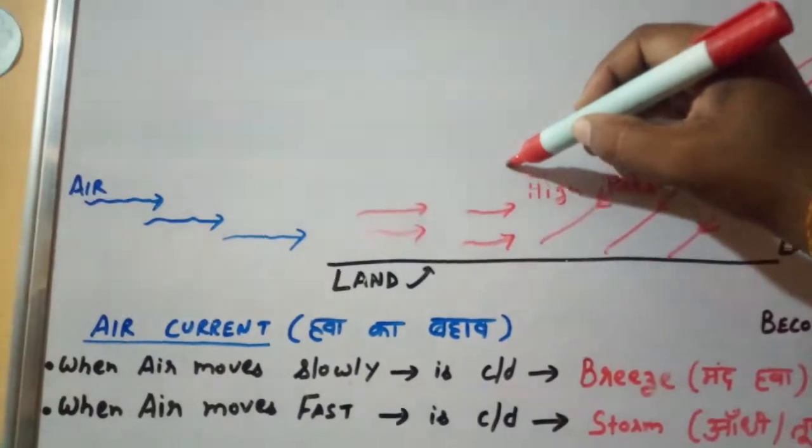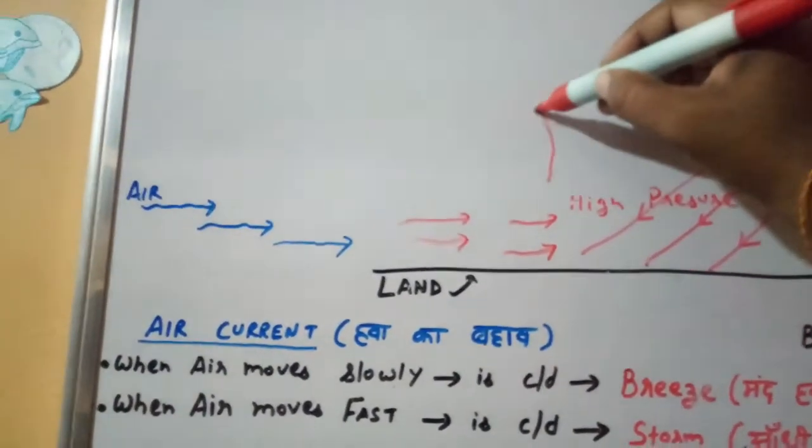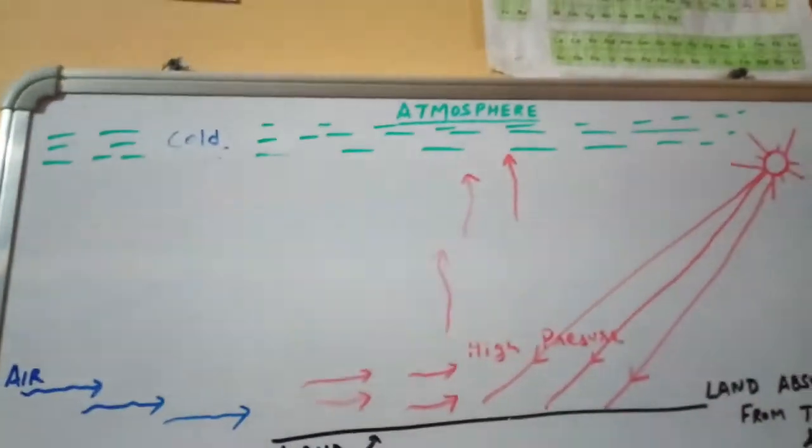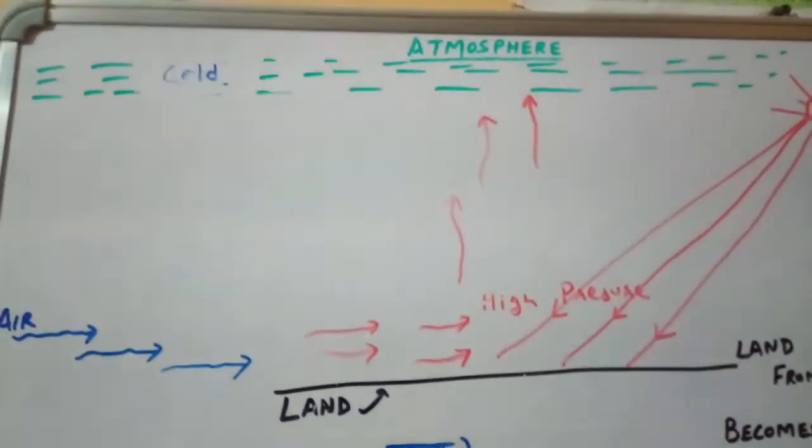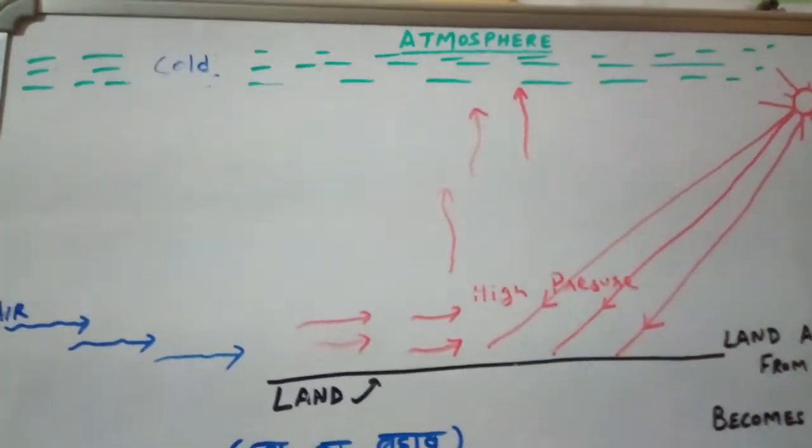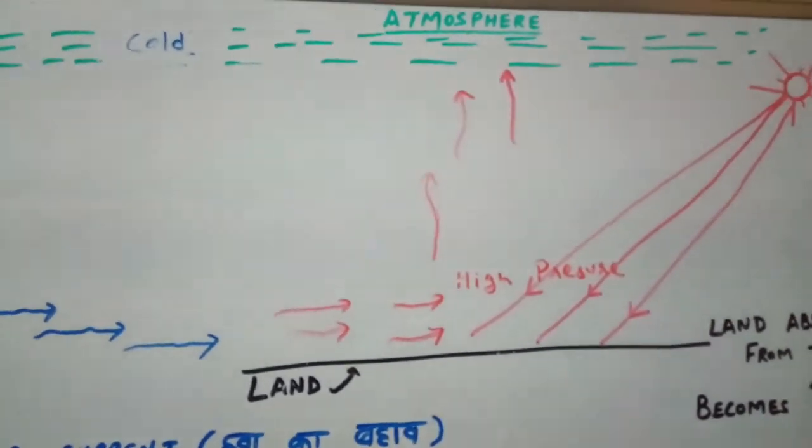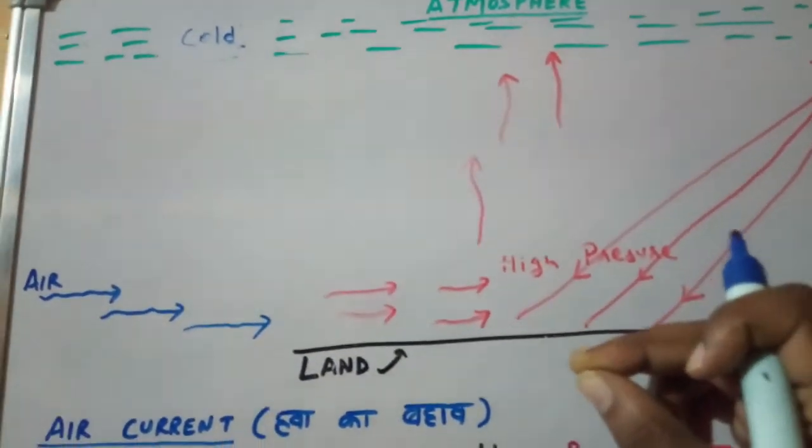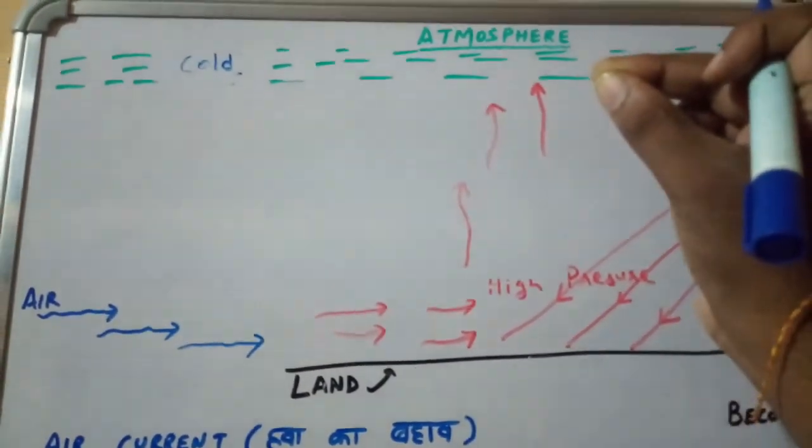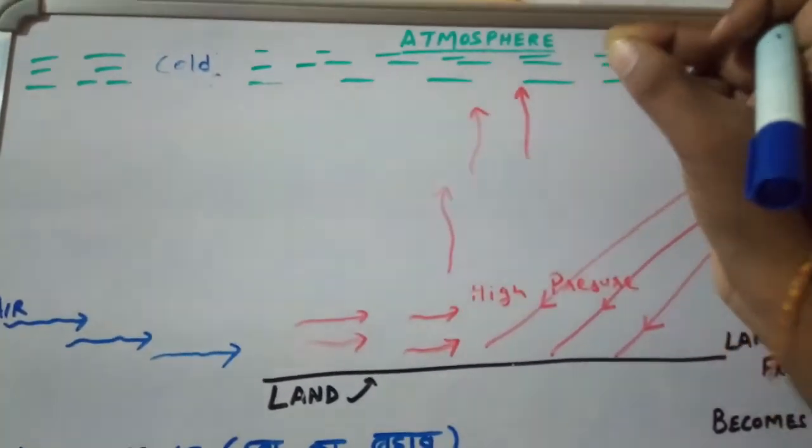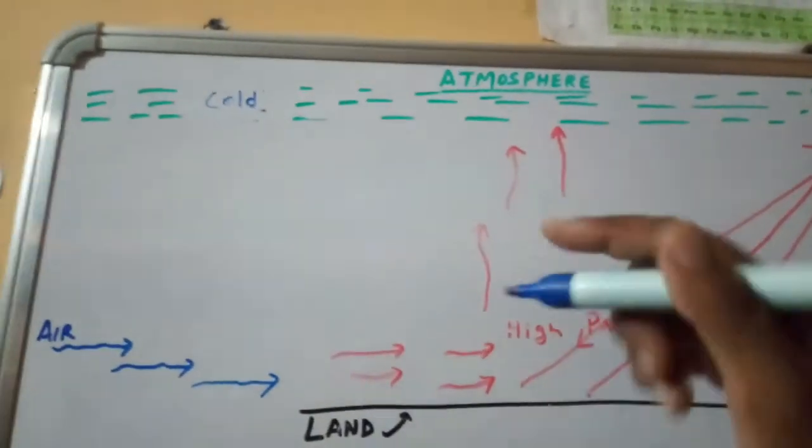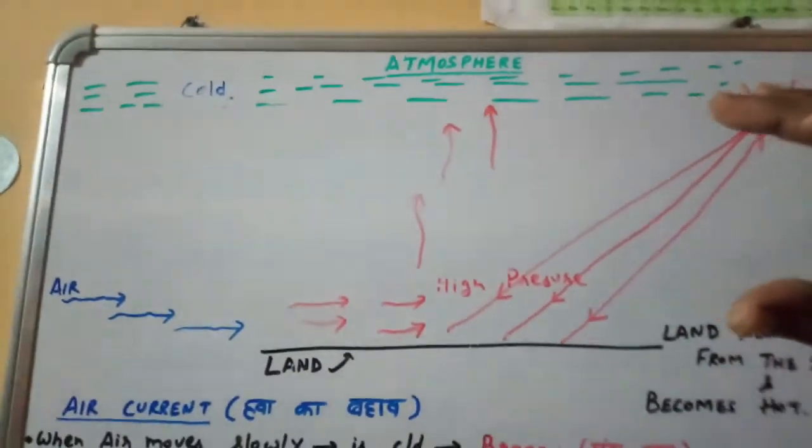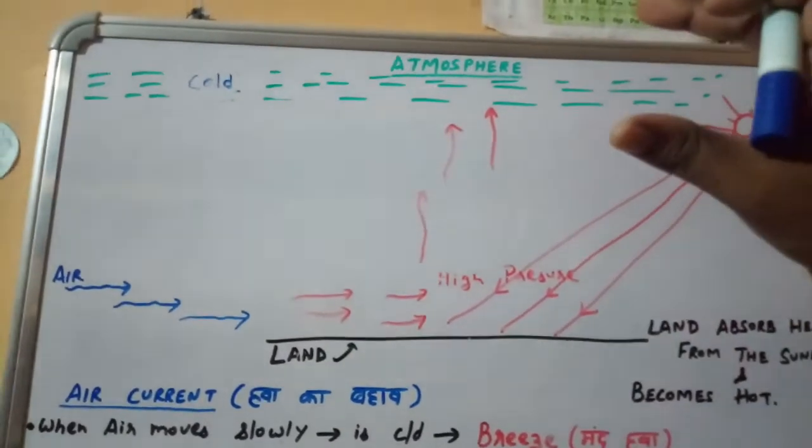Due to which, this hot air will move towards the region of low pressure, to the region of low pressure which is in the atmosphere where the temperature is cold or cooler than compared to the temperature of land. So this hot air moves with fast speed to the area of low pressure. This is how wind currents are formed due to the uneven heating of land and the atmosphere.